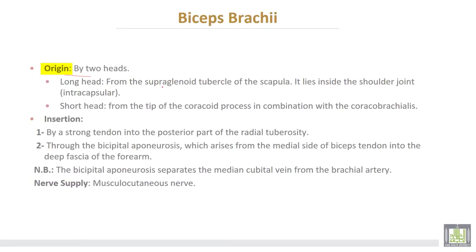The first muscle, the biceps, takes origin by two heads. The long head arises from the supraglenoid tubercle of the scapula — it lies inside the shoulder joint, i.e., it is intracapsular in origin. The short head of the biceps arises from the tip of the coracoid process in combination with the coracobrachialis muscle. Insertion of the biceps is by a strong tendon into the posterior part of the radial tuberosity.